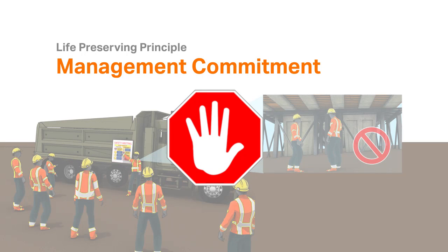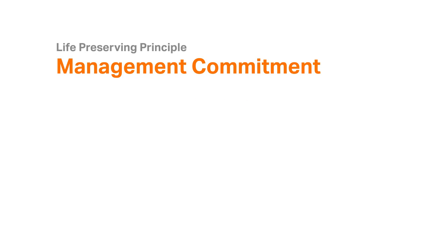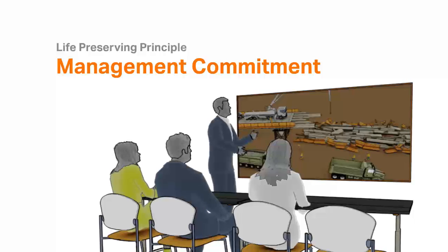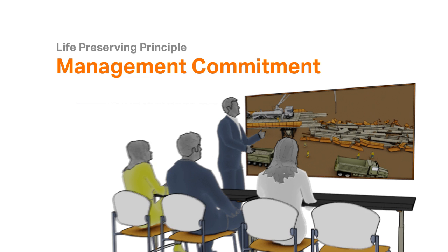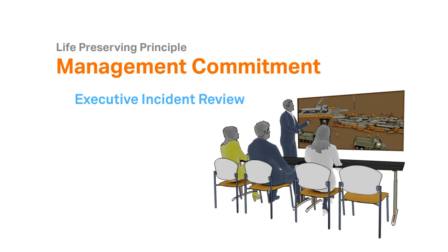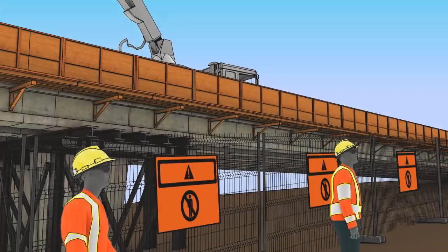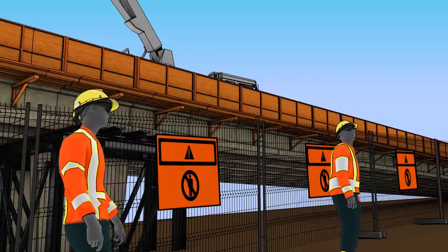If a stop work is called, the management team investigates and corrects the concern. As part of management commitment, we want to communicate what we learned with the leadership team responsible for the project or operations where the incident occurred. An executive incident review is vital to aligning the expectations of the leaders from the executive down to the line supervisor on understanding what happened and how it will be prevented in the future.